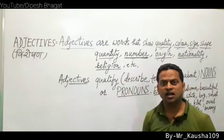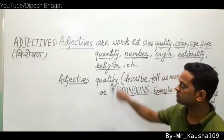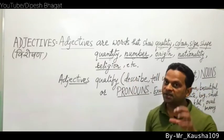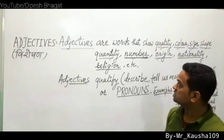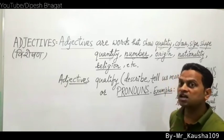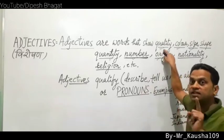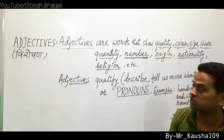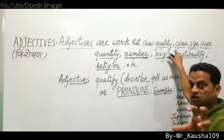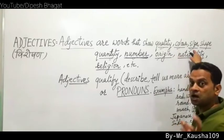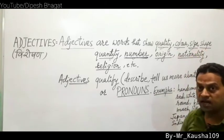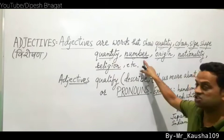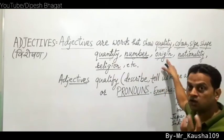Adjectives show many things: good quality or bad quality of something — positive quality or negative quality. They also show color (rung), size and shape (akar prakar), quantity, amount, and number, and so on.